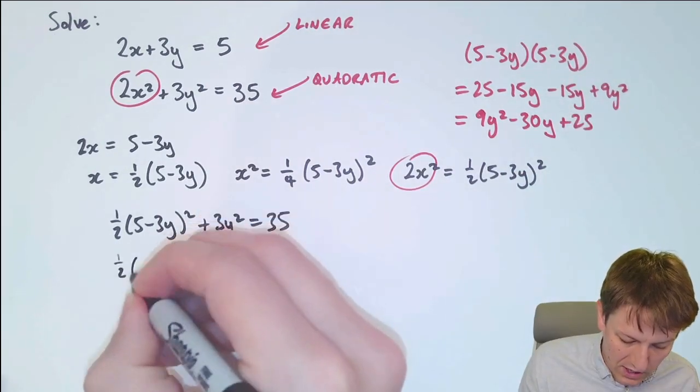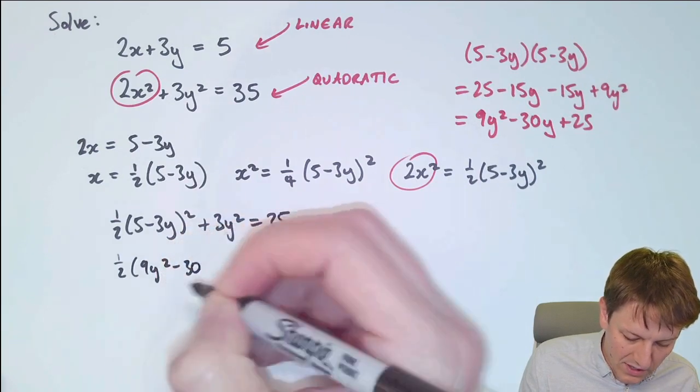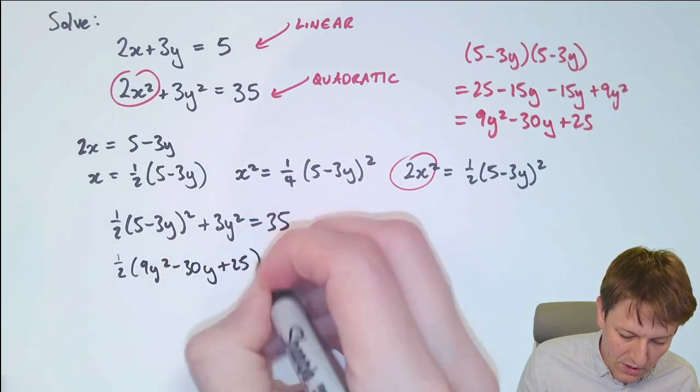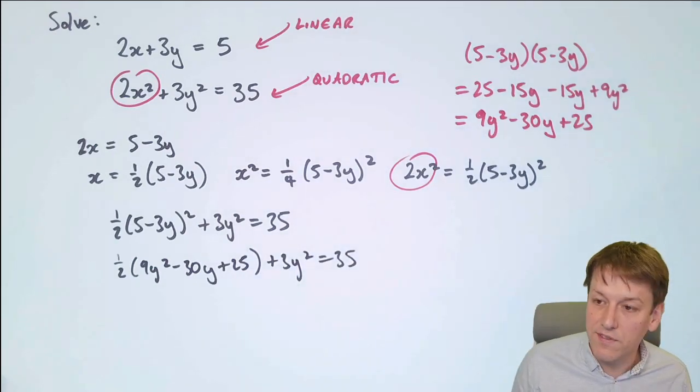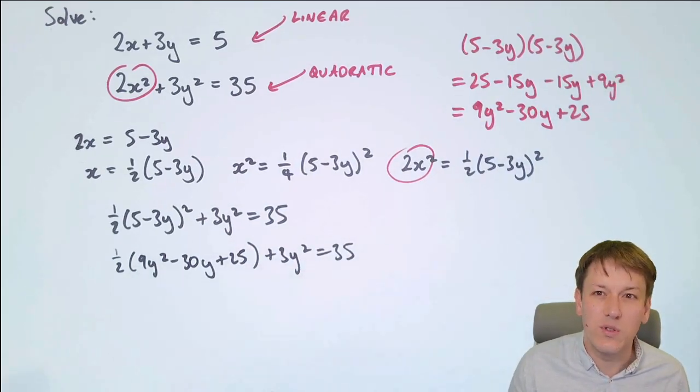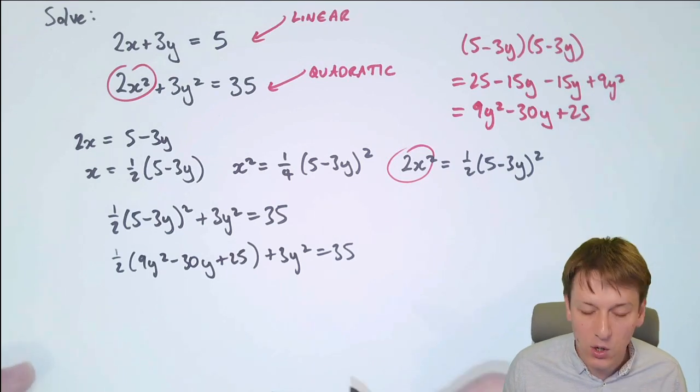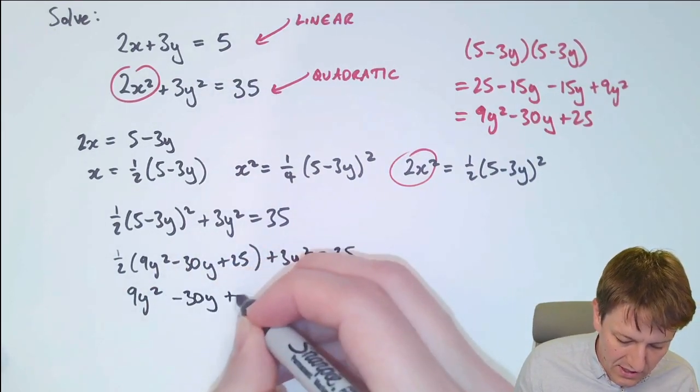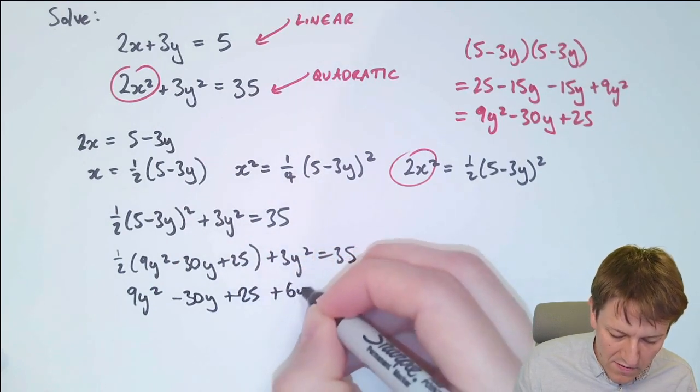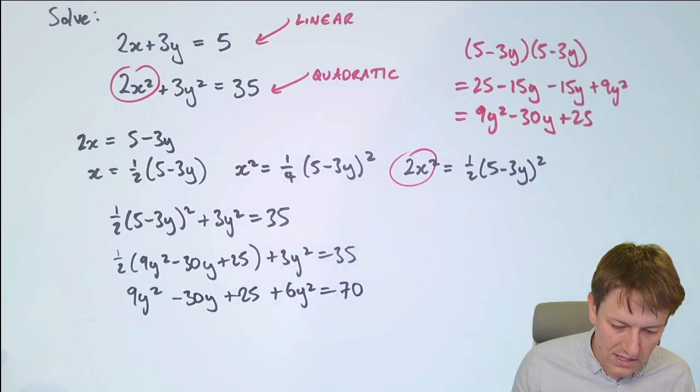So here we've got a half of 9y squared minus 30y plus 25 plus 3y squared equals 35. This half is a bit awkward, so I'm just going to multiply both sides of the equation by 2, and get 9y squared minus 30y plus 25 plus 6y squared is equal to 70.